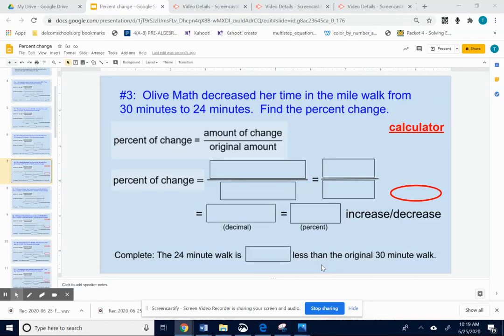Okay, number three. Olive Math decreased her time in the mile walk from 30 minutes to 24 minutes. Find the percent change.